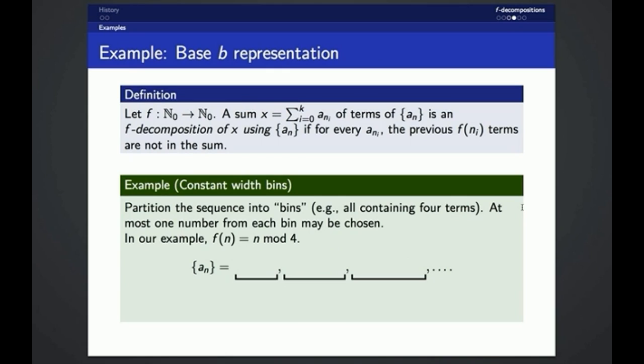Here's another example. If we partition our sequence into bins containing four terms in this example, and we say that our rule is that at most one number from each bin can be chosen in decomposition, then what F means in terms of this sequence is that F of n equals n mod 4.